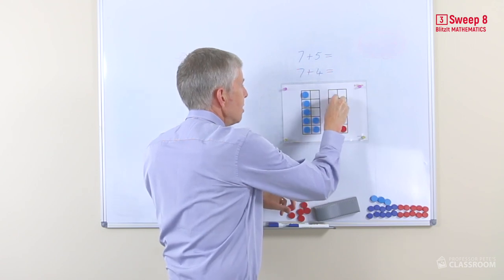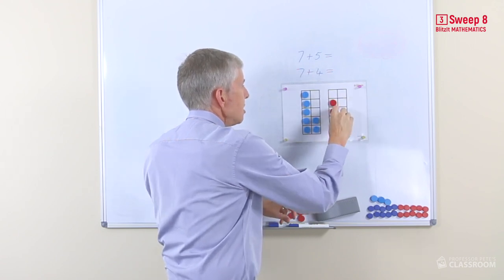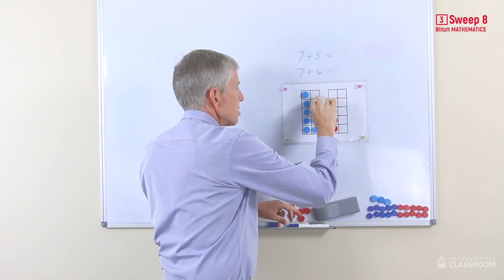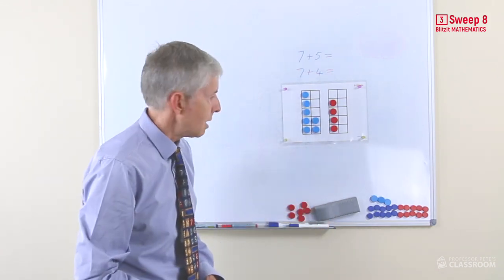Or with the rows arrangement, again, you can see these three counters need to move across to there to make the answer 11.